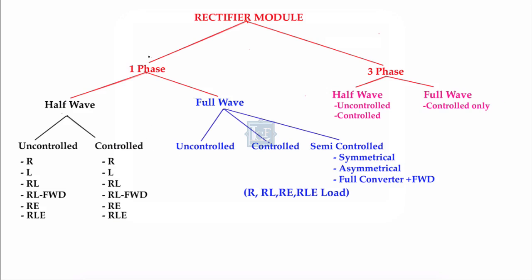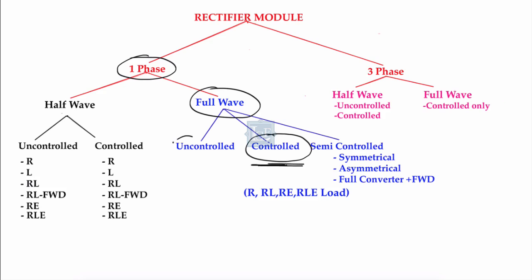In the previous lecture we covered single phase full wave controlled rectifier and derived important parameters like output voltage of single phase full wave controlled bridge rectifier, as well as the Fourier series of source current. Those parameters can also be applied for uncontrolled rectifier — you only have to put alpha equal to zero.